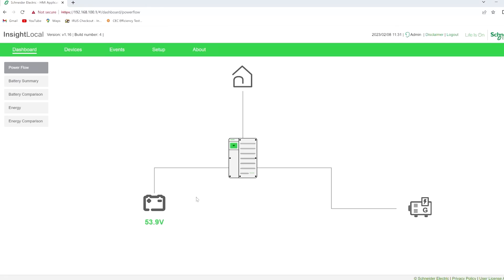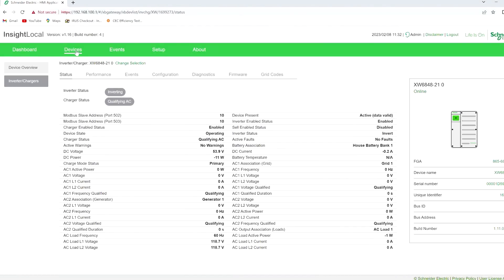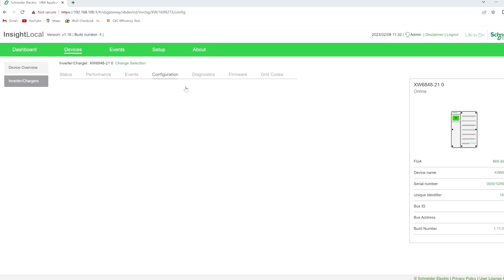I just logged into the Insight Home software called Insight Local. If you want to see more details on how to set this up, check out one of my previous videos. I'll leave a link in the description below. Now we can either click on the little icon there, or you can click devices up in the top tab here. But the point is that we're going to get into the inverter to set things up.